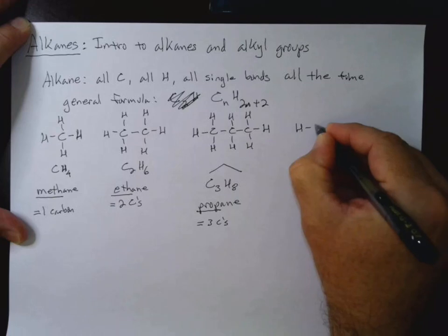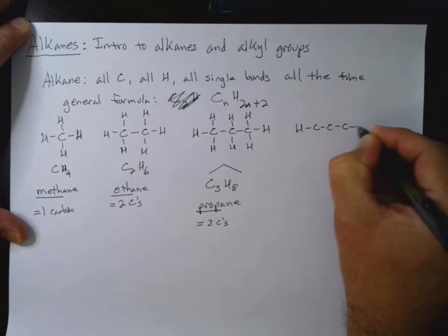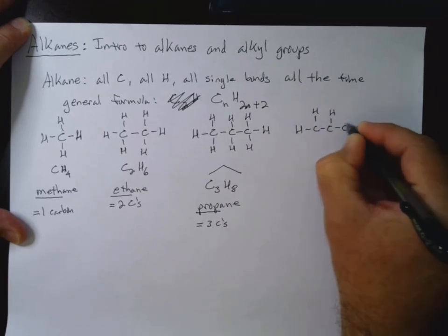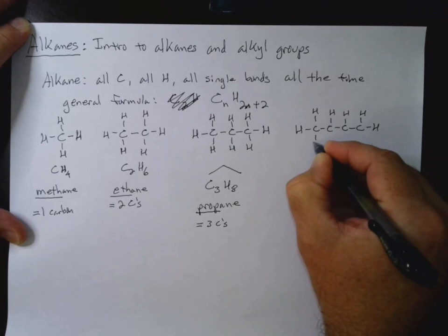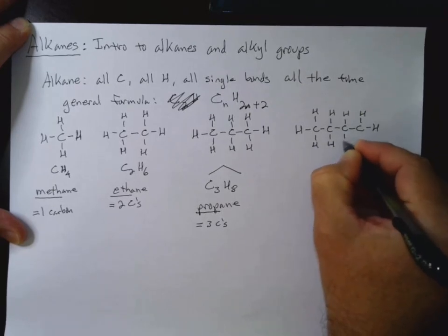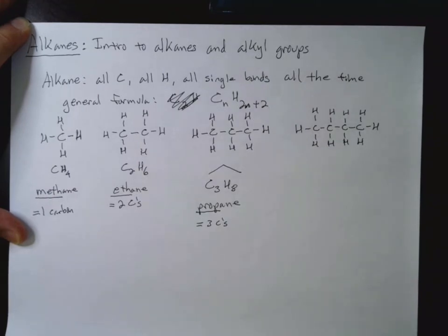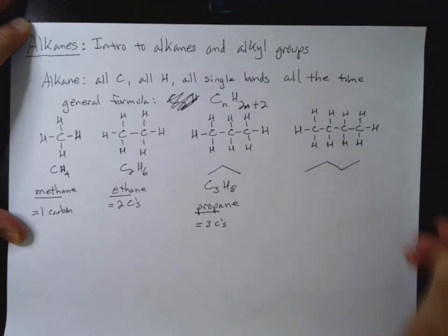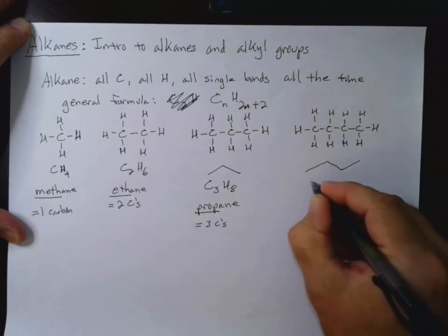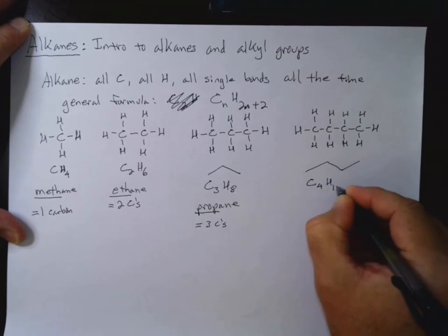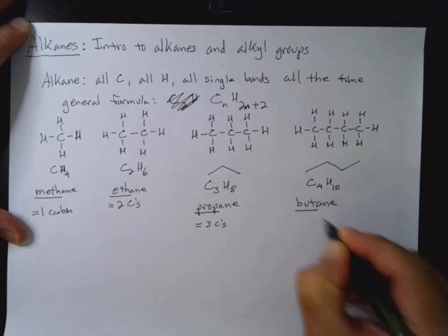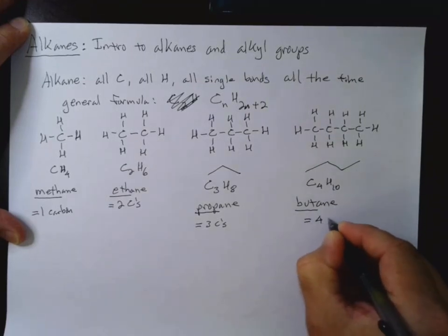Now it is a good thing to memorize your prefixes, because those are simply something you need to know. 4 carbons, our bond line structure, looks like that. And this is C4H10. And this is butane. So bute equals 4 carbons.